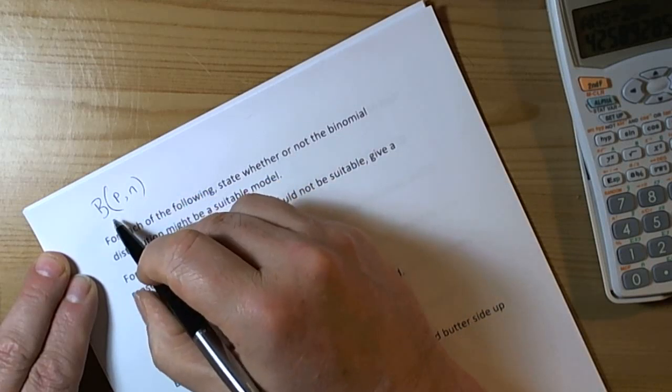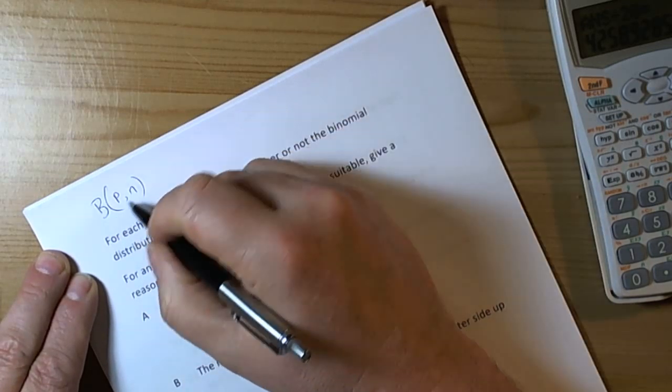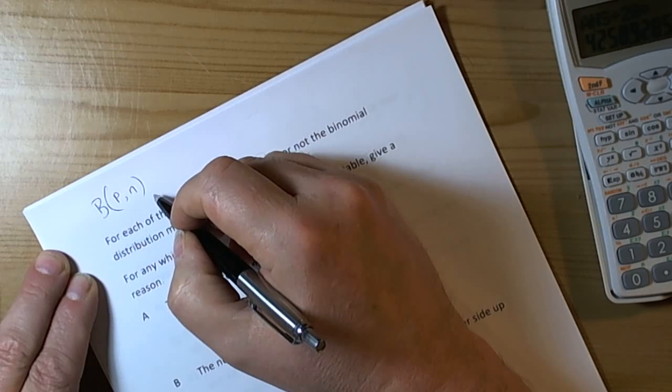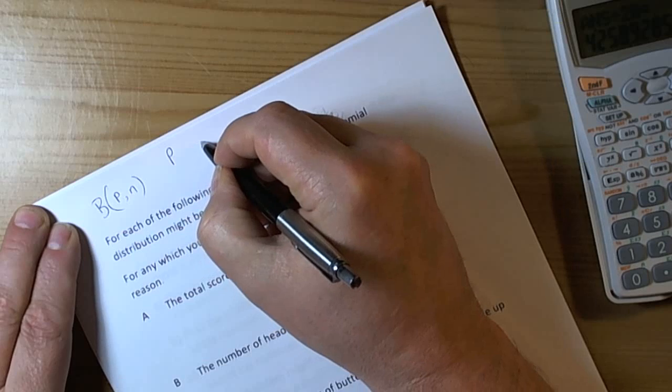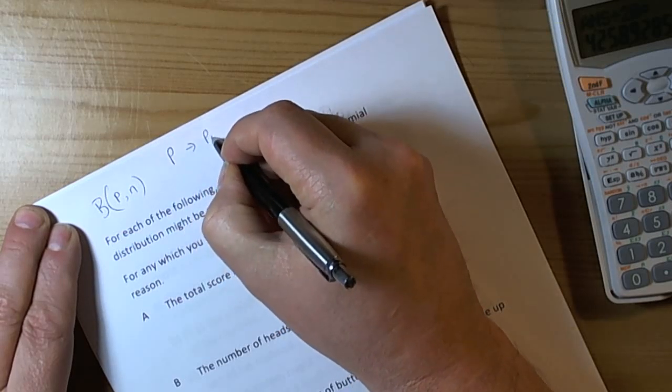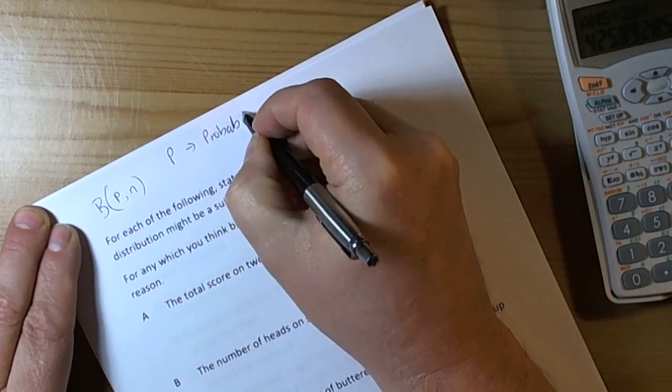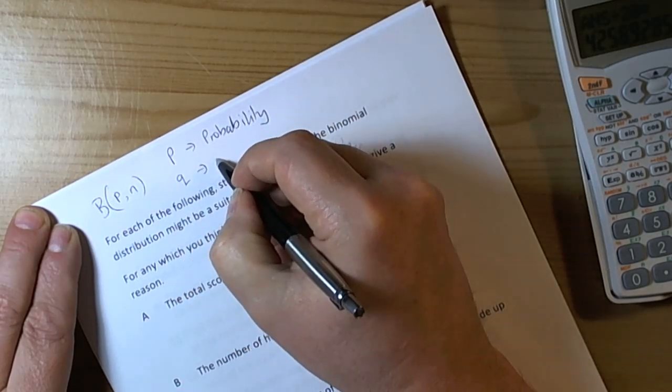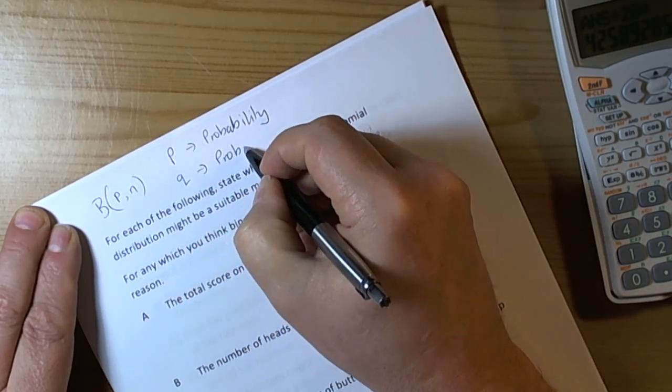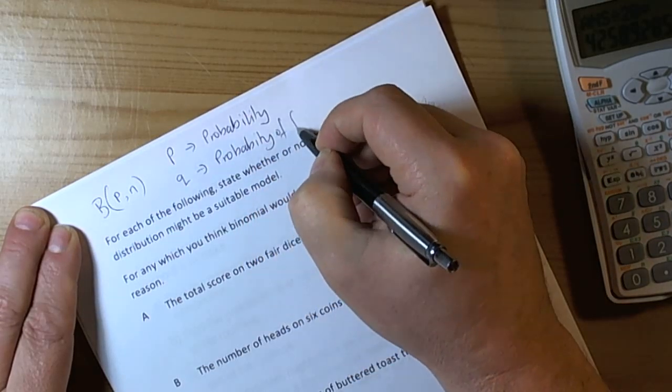So we need to think about what this is telling us. To be able to deal with a binomial distribution, there must only be two outcomes. We talk about a probability p, which is the probability of success, and a probability q, which is the probability of failure.